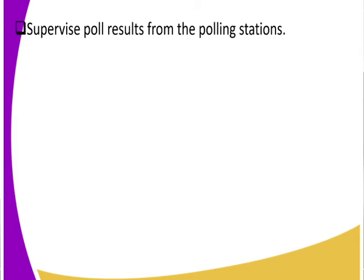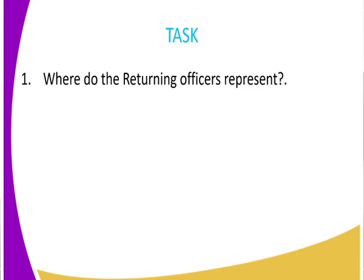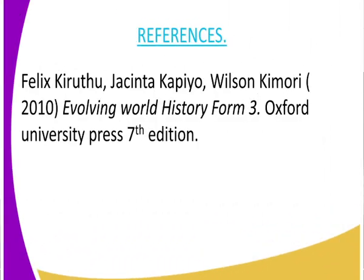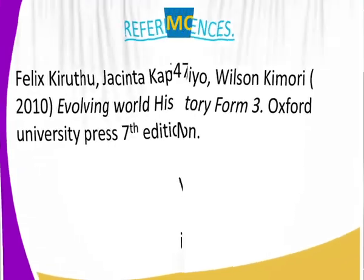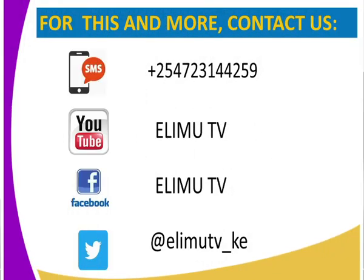We have just looked at the functions of the returning officers. These are people based at the constituency or county level, and we have covered a number of their functions. For your assignment: where do the returning officers represent in the election process? Refer to your history and government textbook. As always, this is ElimTV, your favorite learning channel. Get in touch with ElimTV for more lessons. Thank you so much and see you in the next class.